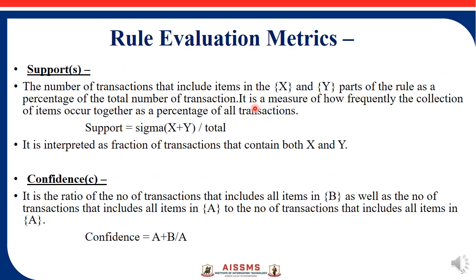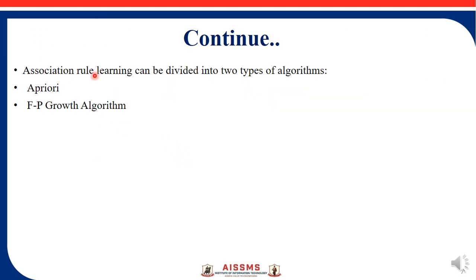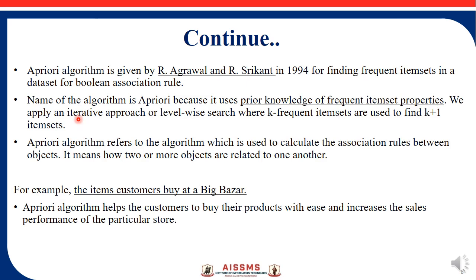For association rule mining there are two algorithms: Apriori and FP-growth. In the next video we will cover FP-growth; here we will see Apriori. The Apriori algorithm is used to calculate association rules between objects — that is, how two or more objects are related to one another.